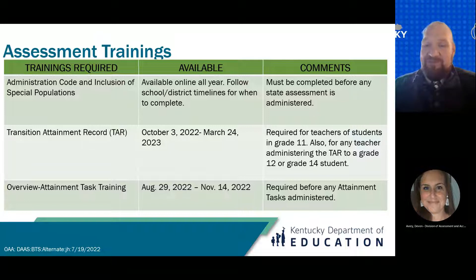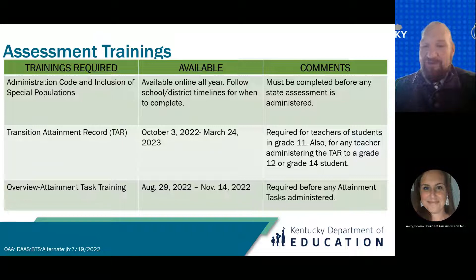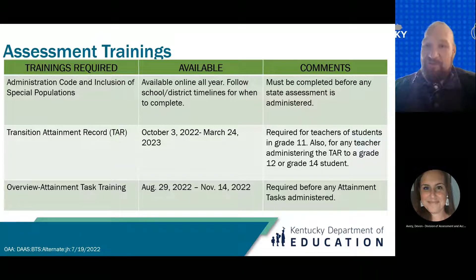This year the Overview Attainment Task training will release around August 29th and must be completed by November 14th, 2022. Any teacher who will administer the alternate Kentucky Summative Assessment must take this training. For high school teachers who administer the Transition Attainment Record, the TAR training will open October 3rd, 2022 and close March 24th, 2023 — moved up from the previous close date near the last day of school so that training is completed before the TAR work begins. Anyone needing to take the training after March 24th, 2023 will need to contact me to get it unlocked.